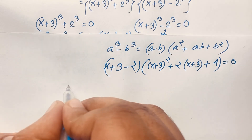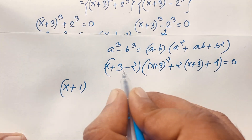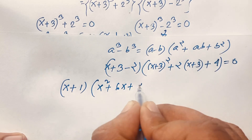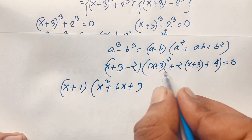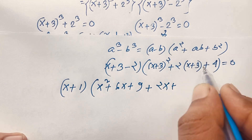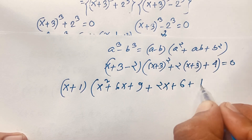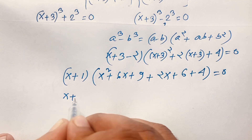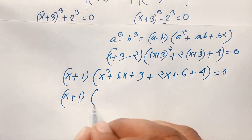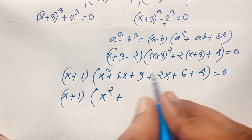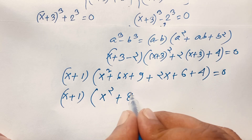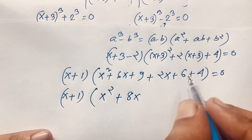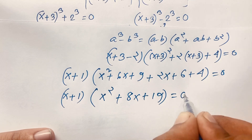Then I can see easily here is (x+1), because 3−2=1. And expanding: x² + 6x + 9 + 2x + 6 + 4 = 0, so x² + 8x + 19 = 0. So it becomes (x+1)(x² + 8x + 19) = 0.